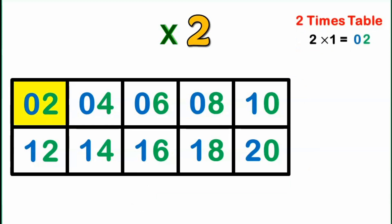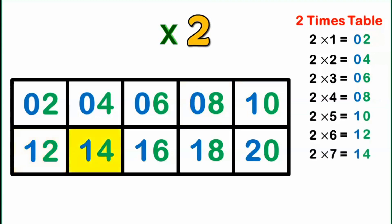So, we have 2 times 1 is 2, 2 times 2 is 4, 2 times 3 is 6, 2 times 4 is 8, 2 times 5 is 10, 2 times 6 is 12, 2 times 7 is 14, 2 times 8 is 16, 2 times 9 is 18, and 2 times 10 is 20.